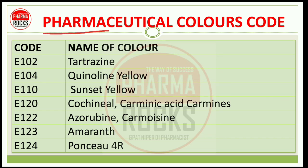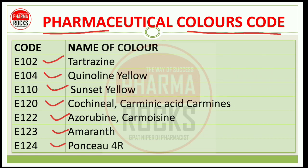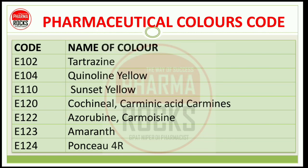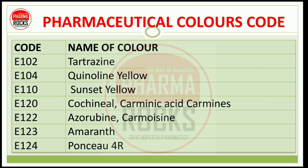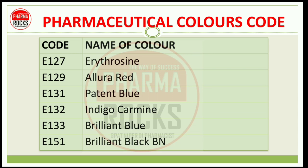Pharmaceutical color codes (important for exams): E102 — tartrazine; E104 — quinoline yellow; E110 — sunset yellow; E120 — cochineal, carminic acid, and carmines; E122 — azorubine and carmoisine; E123 — amaranth; E124 — ponceau; E127 — erythrosine; E129 — allura red; E131 — patent blue; E132 — indigo carmine; E133 — brilliant blue; E151 — brilliant black. Code में से भी कई बार question पूछा जा सकता है.